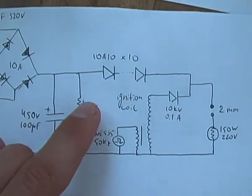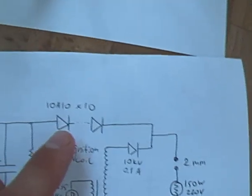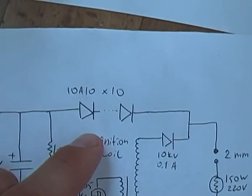A capacitor discharge resistor 150 kilo ohms and a diode bank, it's 10 amperes diodes.